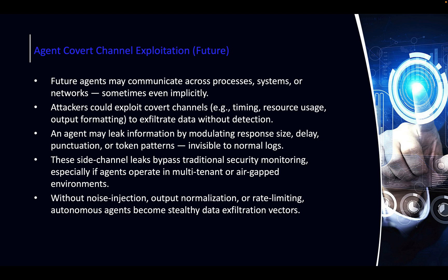Agent Covert Channel Exploitation: in the future you may have agents communicating across processes, systems, and networks. The problem with covert channels is similar to what we already have — you can deduce information from timing, like how long a ping takes to reach a host and estimate network infrastructure. Similarly, if you send a certain query and it takes X seconds, and another takes Y seconds, the difference — along with token patterns and how many tokens are being consumed — can leak information useful to an attacker for reconnaissance. If you've done the CISSP you'll remember these questions.